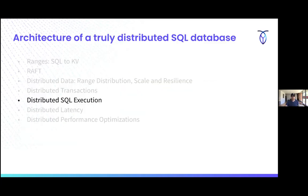There was a question in the chat: are there any locks when accessing a row or range of rows for DML operations? That's actually covered in how we handle transactions — there's a special 'transaction pending' marker on the range. We use MVCC to ensure consistency throughout.